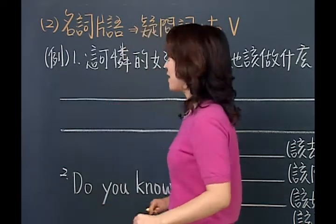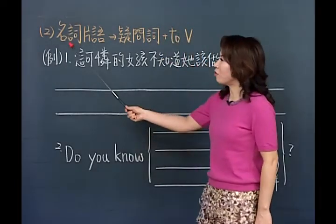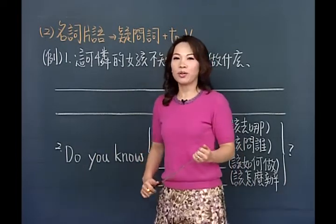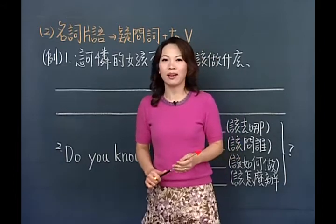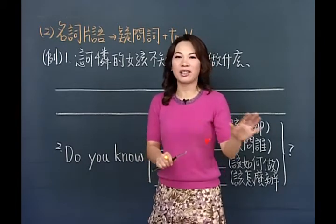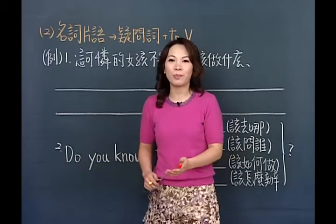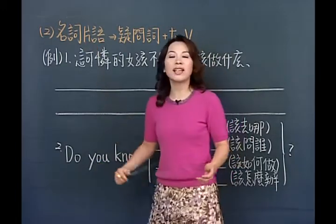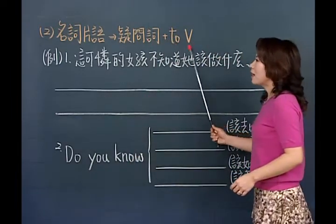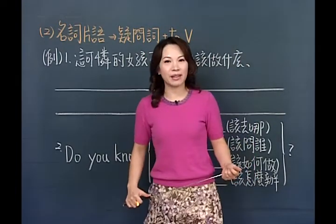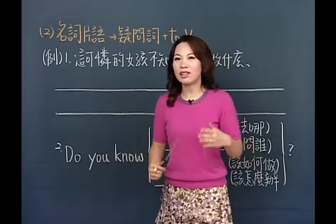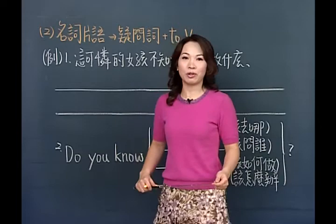在特别注意的间接问句的第一项里面，要记住：间接问句有基本的形成方法，但含有do you think等变化的句型也要特别小心。接下来我们来看第二个要特别注意的间接问句用法——名词片语。什么叫名词片语呢？名词片语是疑问词加上不定词。有的同学说我学过动词片语，比如take away（拿走）、give up（放弃）。